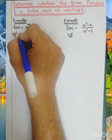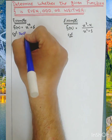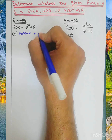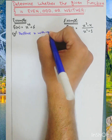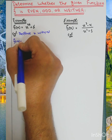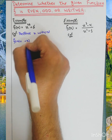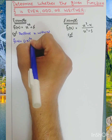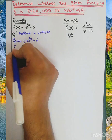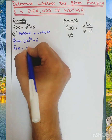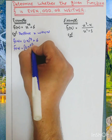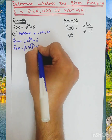Let me replace x with minus x. f of minus x is equal to minus x to the power 2/3 plus 6, which simplifies to minus x squared to the power 1/3 plus 6.